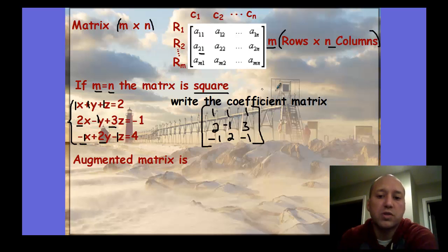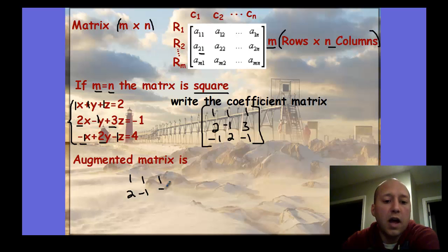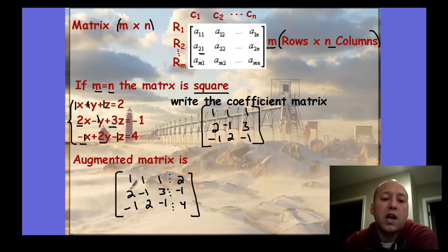Each of the columns are going to be the variables. This first column is the x column, then a y column, and a z column, the coefficients for those variables. Each row is an equation. An augmented matrix, this might be a little new here, is the same thing. We're taking this coefficient matrix, but it's not going to be a square matrix now. We're going to add in our constants or our solutions for these equations. With the three dots, we put the 2, the negative 1, and then the 4.